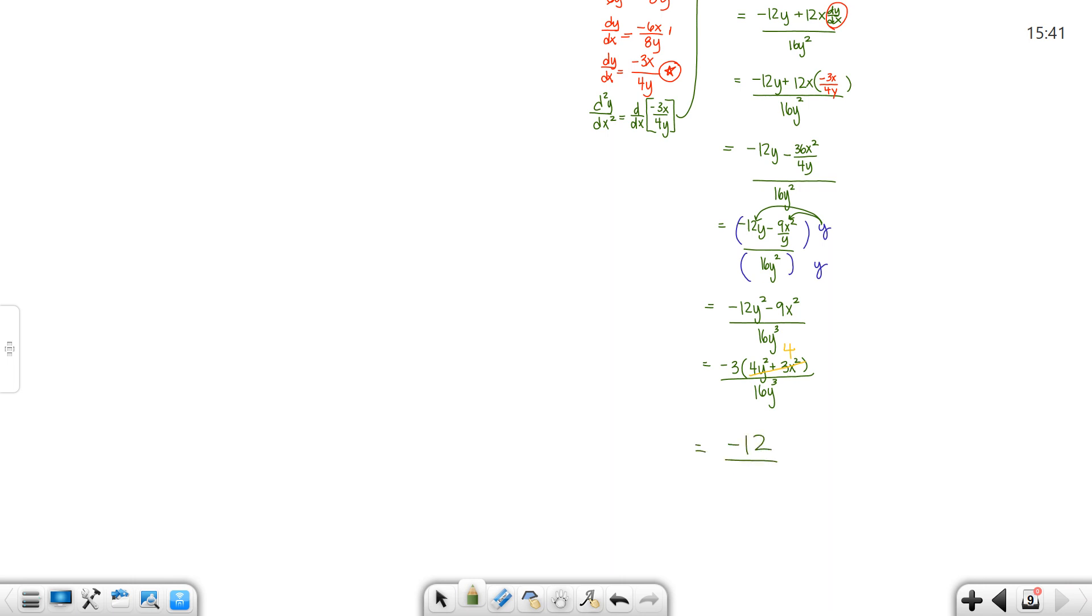So that gives you a negative twelve in the top and a sixteen y cubed in the bottom. Of course that's your d²y/dx squared. So that simplifies because it reduces by four to negative three over four y cubed.